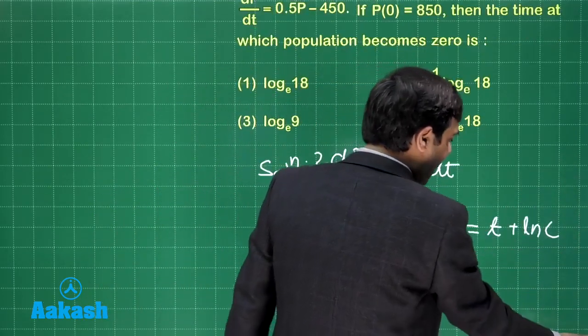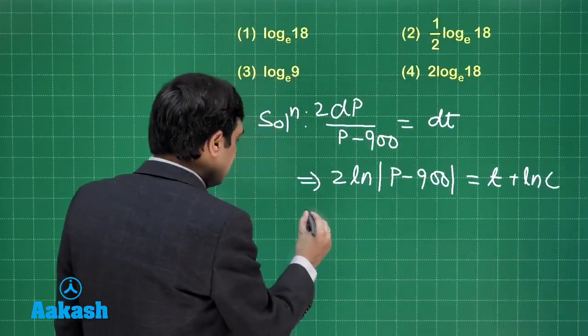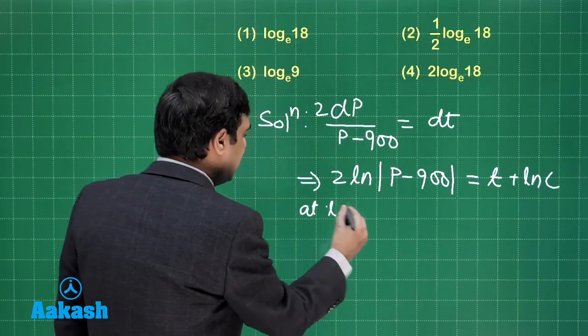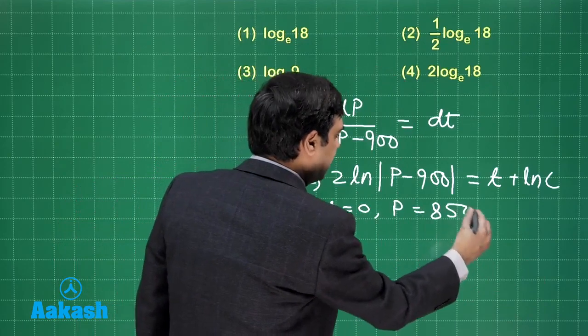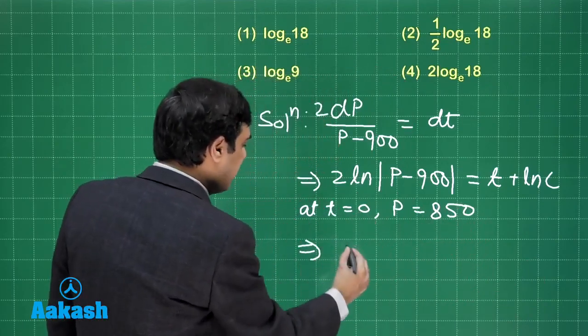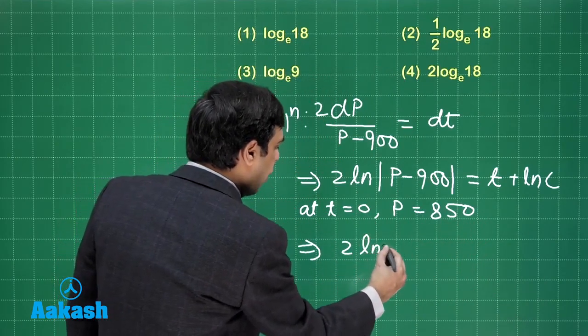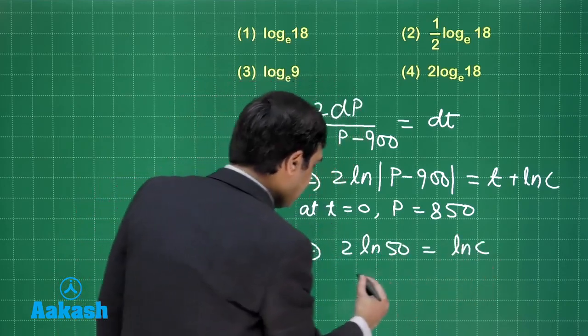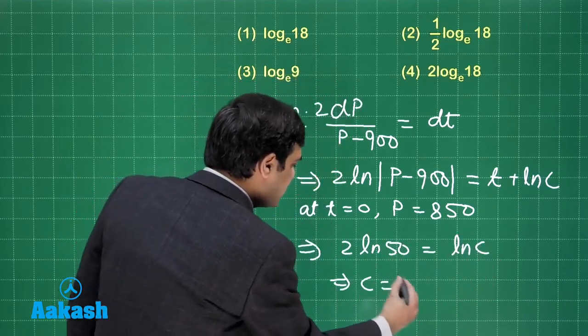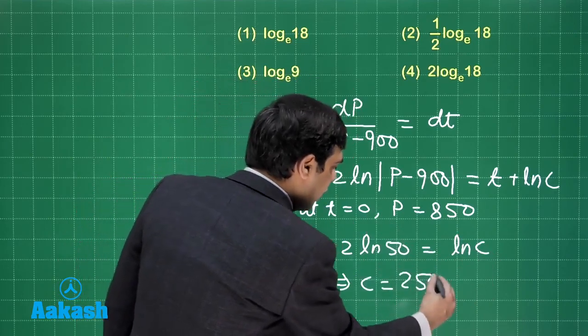Now initial value condition given at t equals 0, at t equals 0 P is 850, that means we simply have 2 log 50 is equal to log c or the value of c is 50 squared that is 2500.